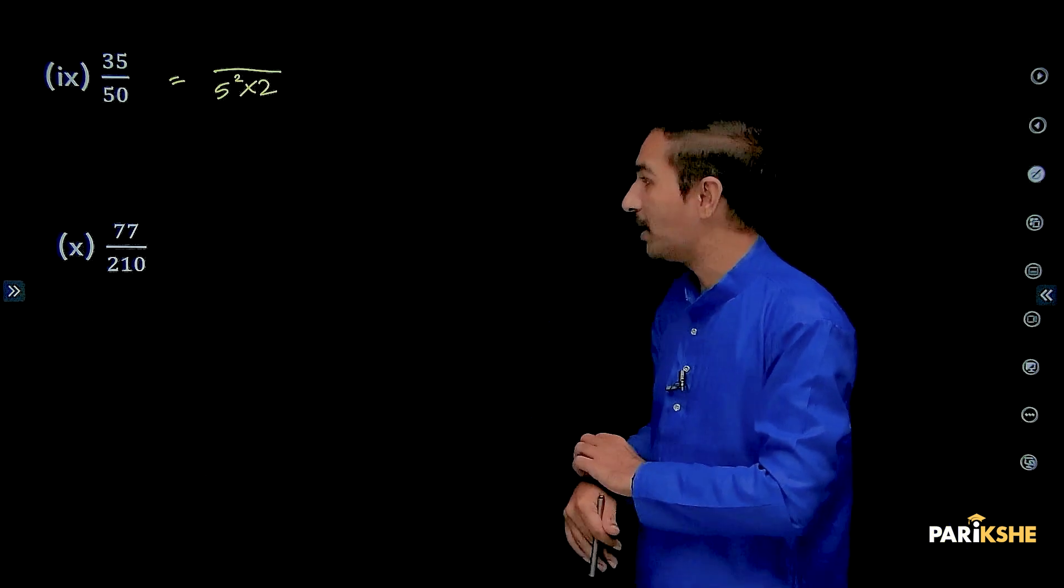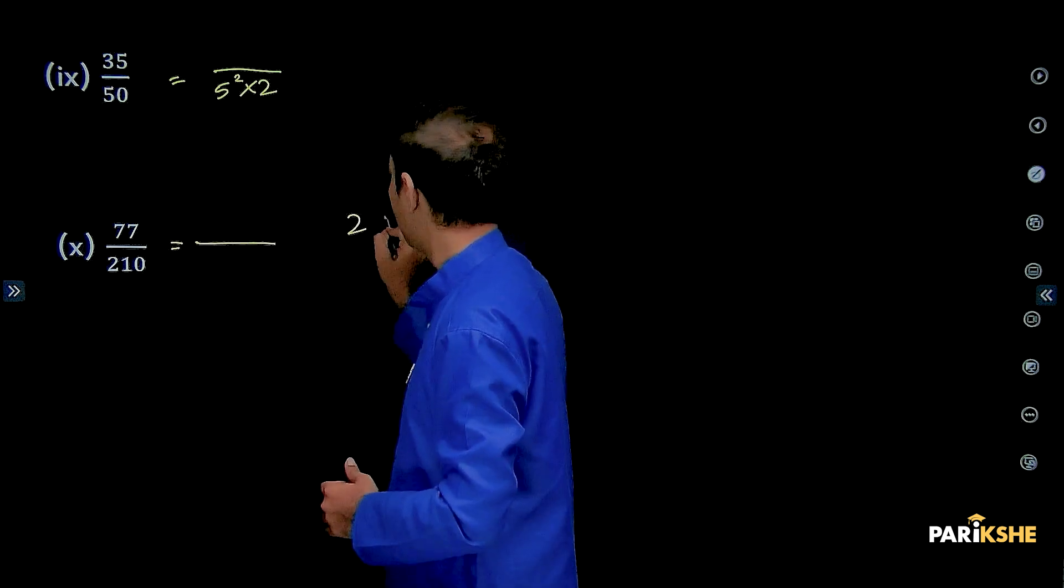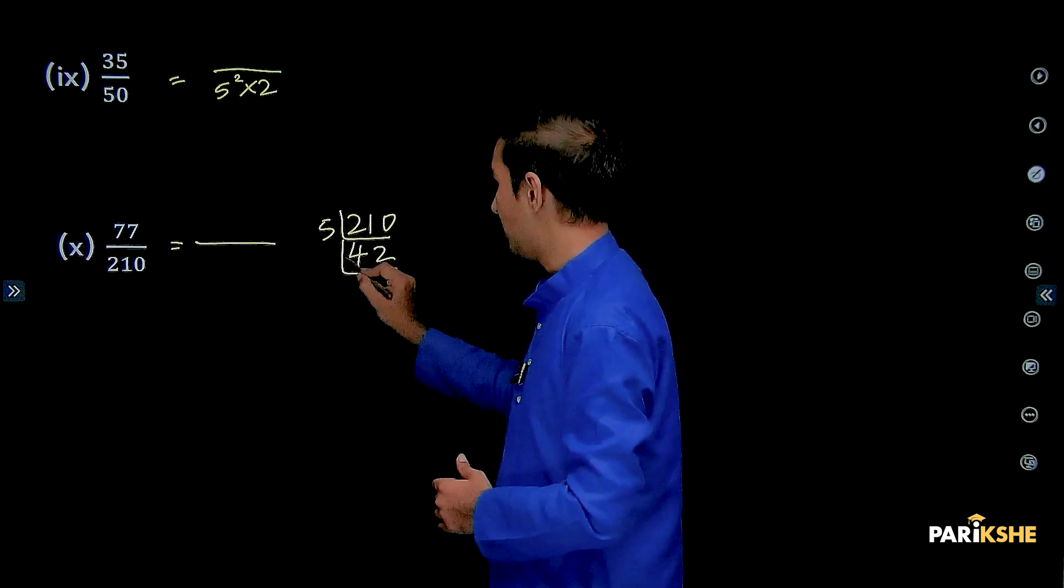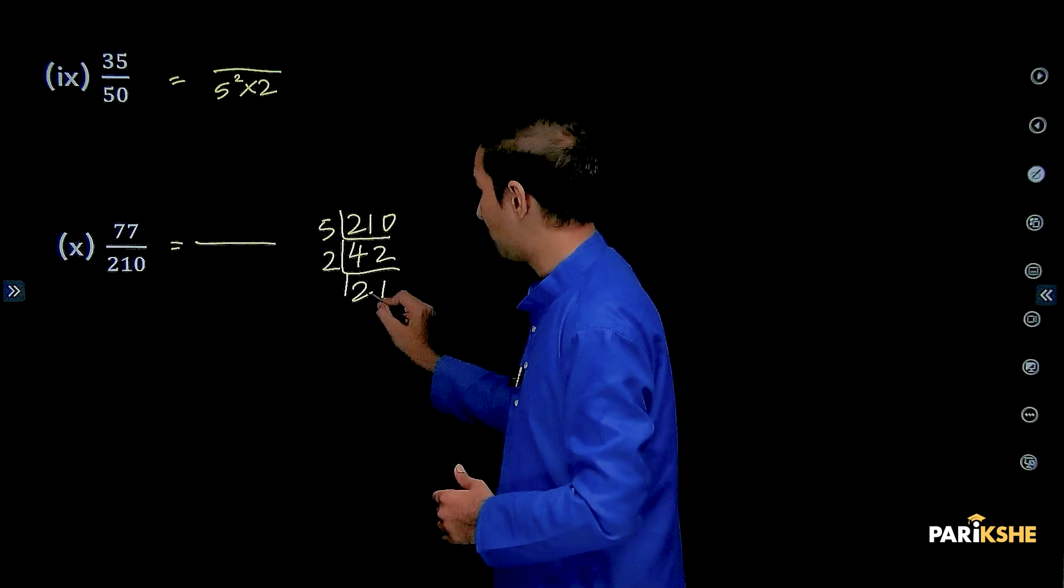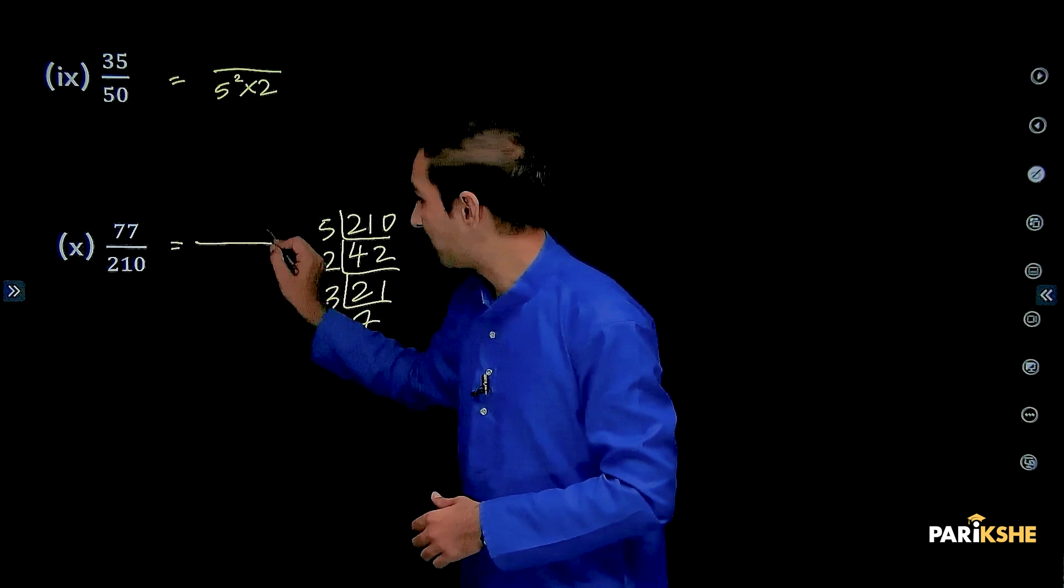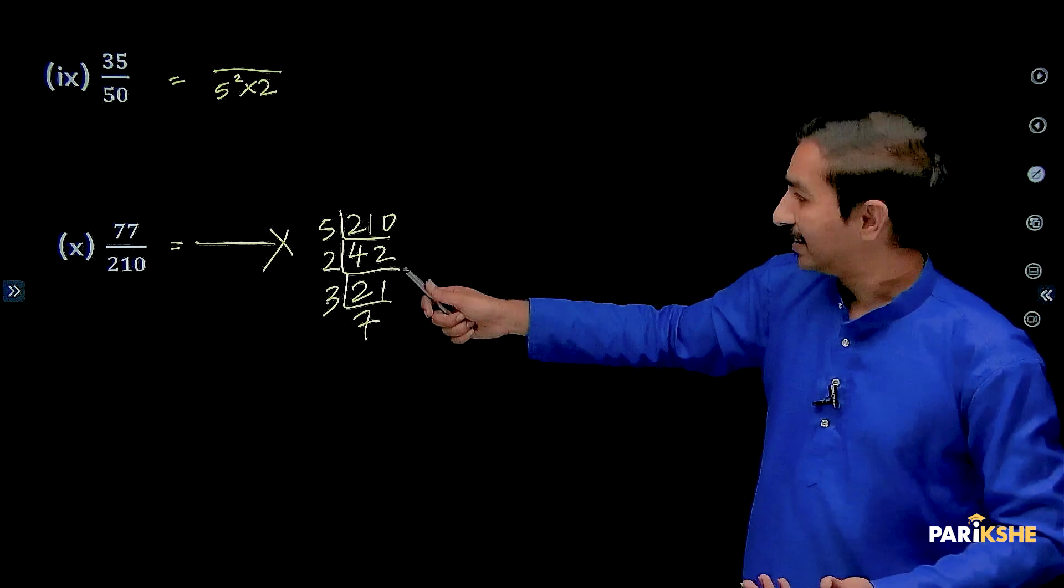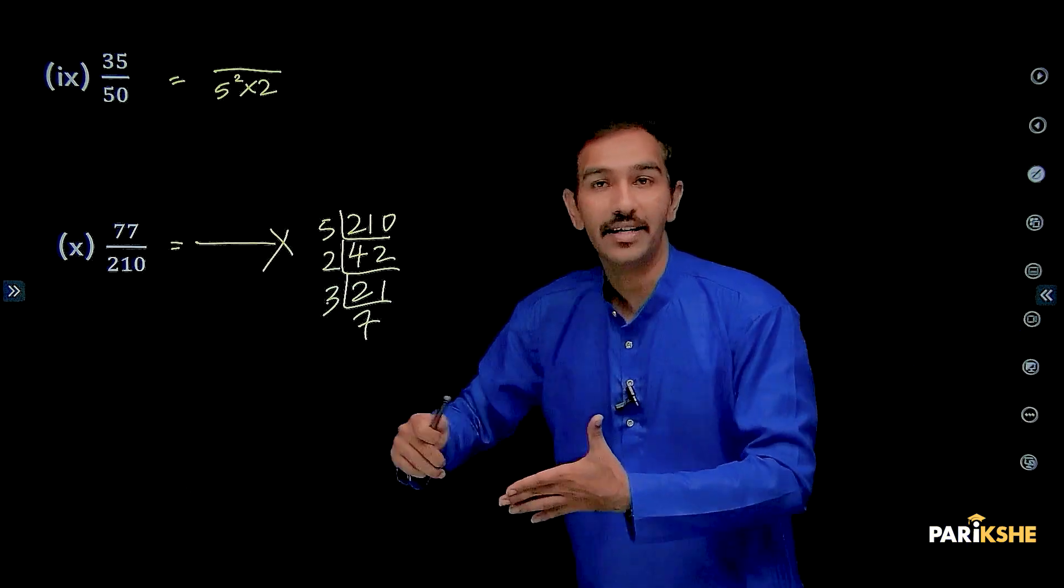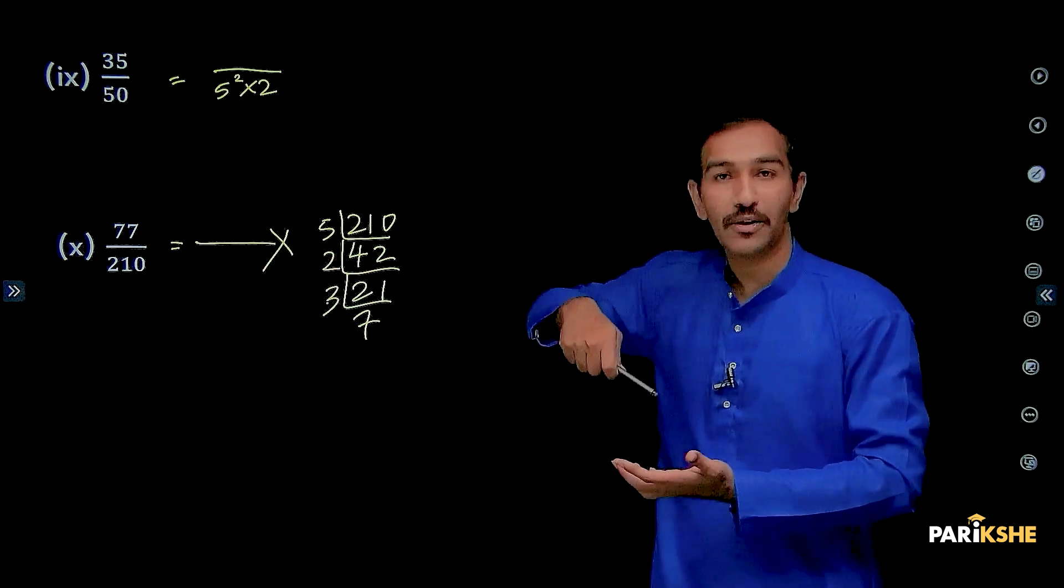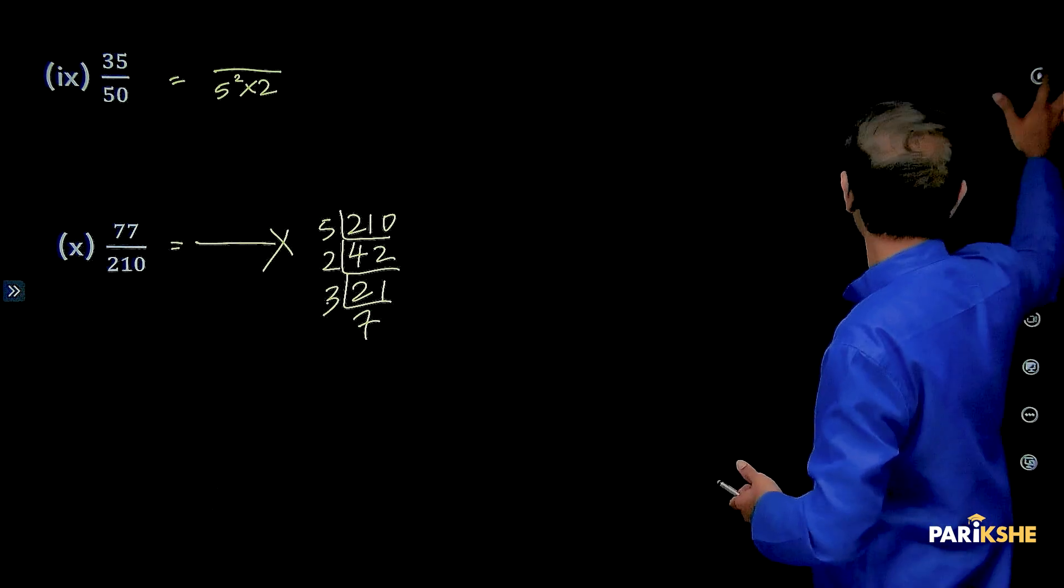Next question, 29/210. 210 terminate agatha divided by 5 maadi. 210 divided by 5, 5 4s are 20, 1 5 2s are 10, mathe 2 21 agathe, 21 banthu, 3 7s are 21, 3 barthayarok karanathe indhaya agathe. This is not in the form of 5 to the power of m into 2 to the power of n. Therefore, this fraction has non-terminating decimal expansion. Because the denominator is not in the form of 5 to the power of m into 2 to the power of n.